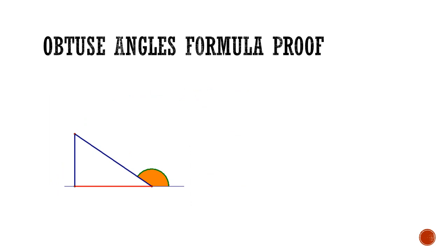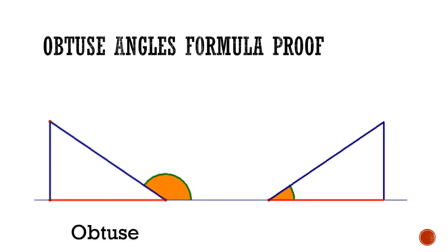So let's take this obtuse right angle triangle and compare this with its acute congruent counterpart. As these two triangles are congruent, the two orange reference angles are supplementary, meaning that they add up to 180 degrees.